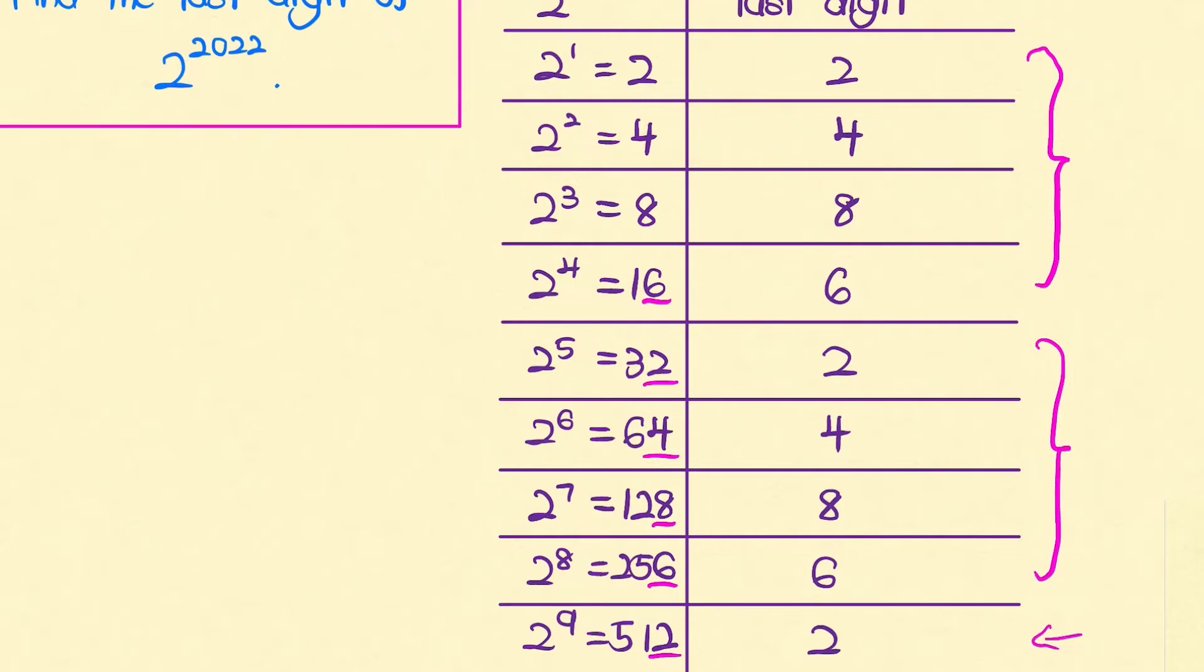Particularly, since the last digit of the number of the form 2 to the power of n has a cycle of 4, in order for us to find the last digit we can actually compute the remainder of the exponent upon division by 4.